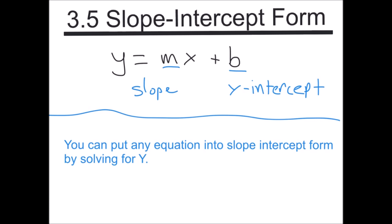One thing to notice is the equation has y by itself. You can take any equation in any form and write it in slope-intercept form simply by solving for y. Don't forget: slope is always the number with x, and b is always the number without x.